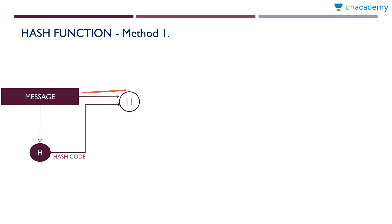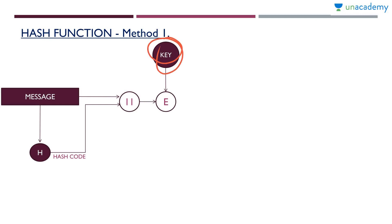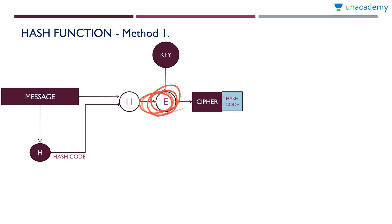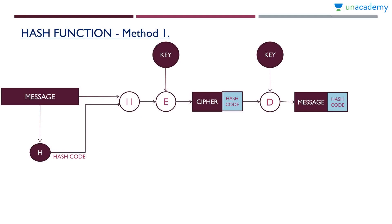This message appended with the hash code will be encrypted. So this appended message — message plus hash code — will be encrypted using a key, and then we will get a cipher that contains both the cipher and the hash code mixed together. We don't know what kind of encryption is being used here, so it may all be mixed. This message plus hash code will be encrypted together and then passed to the receiver.